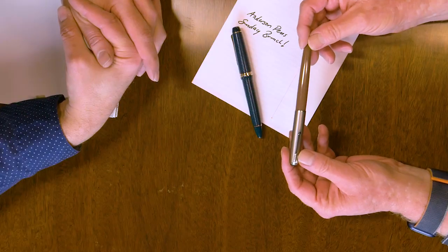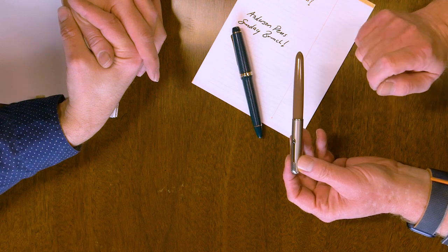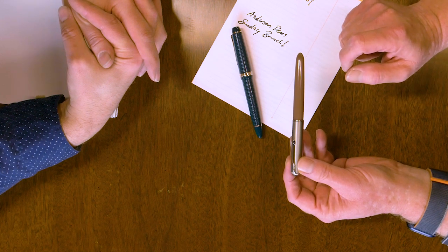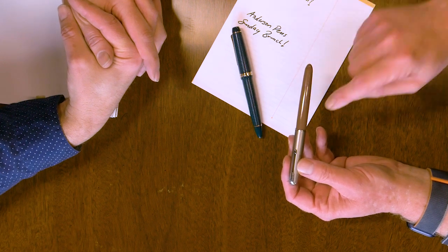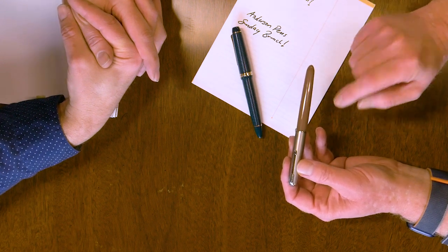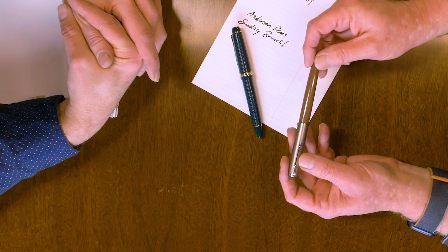My show and tell pen for today is a Parker 51. This one is an aerometric, and I believe it's cocoa. Cocoa, yes. Cocoa color, which is, for some reason, sought after. Only came in an aerometric, as far as I know. I kind of prefer vacuumatic 51s, but if I want this color, I have to get an aerometric.